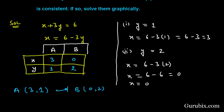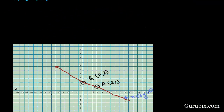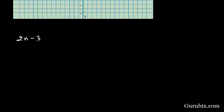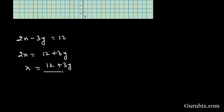Now we move to equation 2: 2x - 3y = 12. We write x in terms of y: 2x = 12 + 3y, so x = (12 + 3y) / 2.